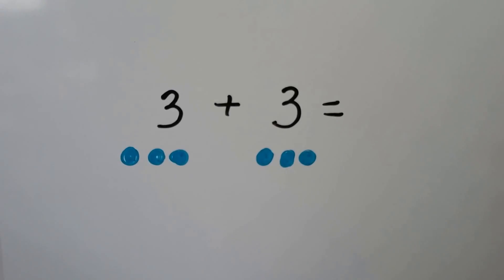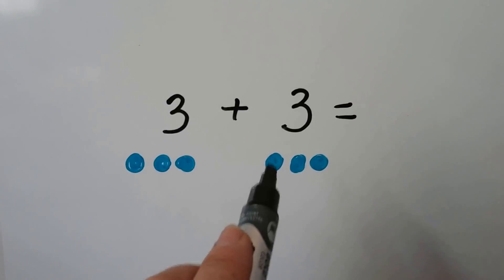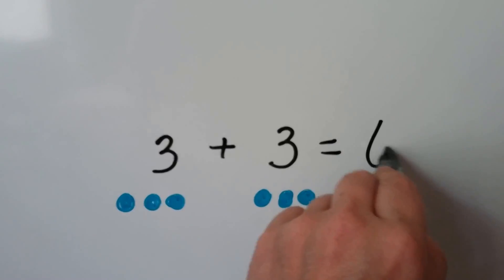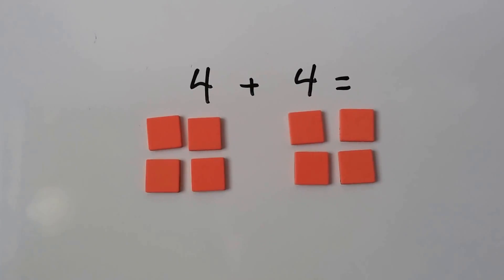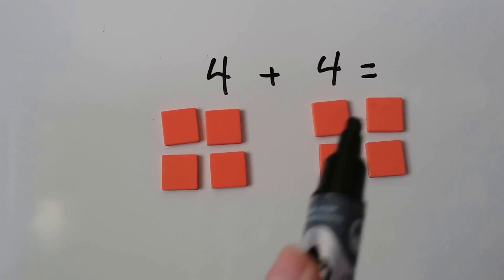Double threes. Three plus three is three, four, five, six. Double fours. Four plus four. Four, five, six, seven, eight.